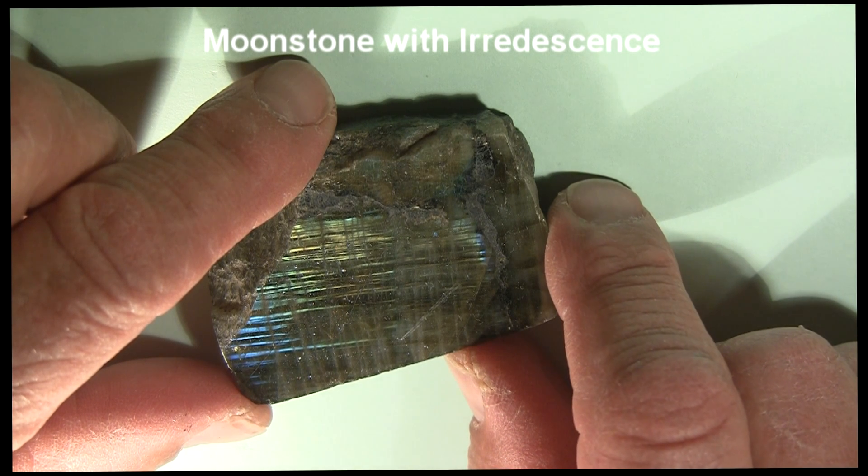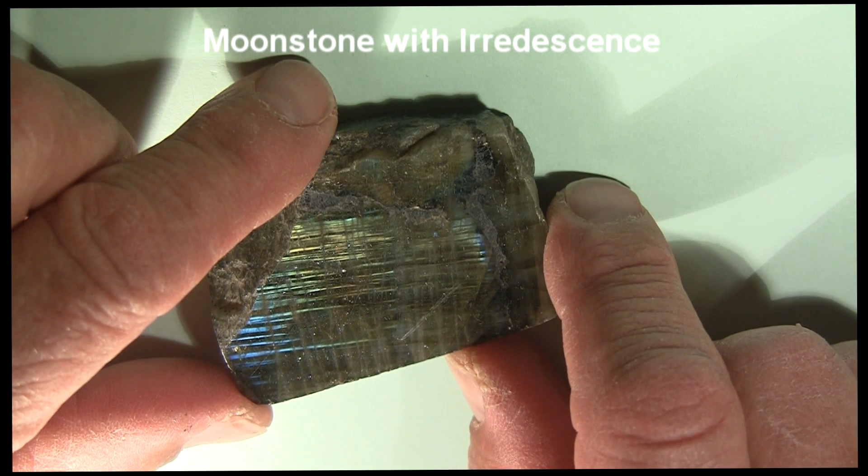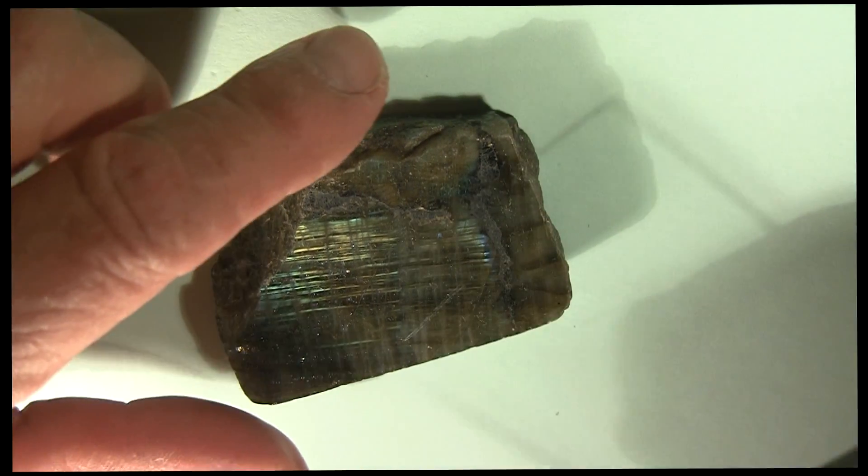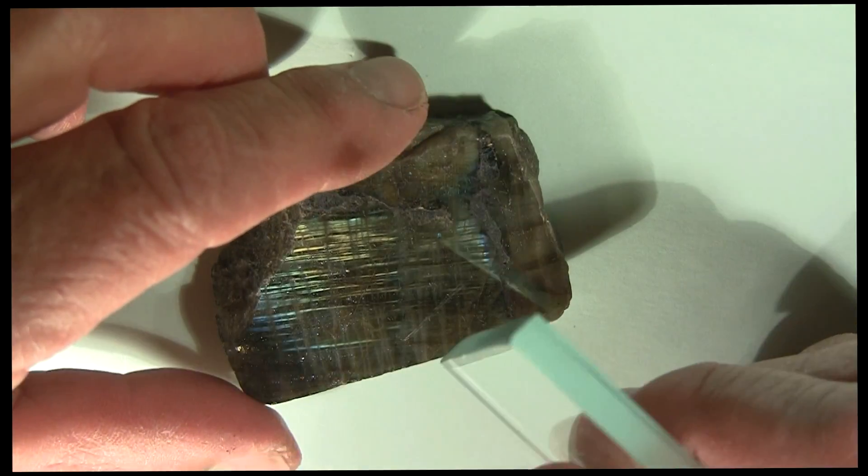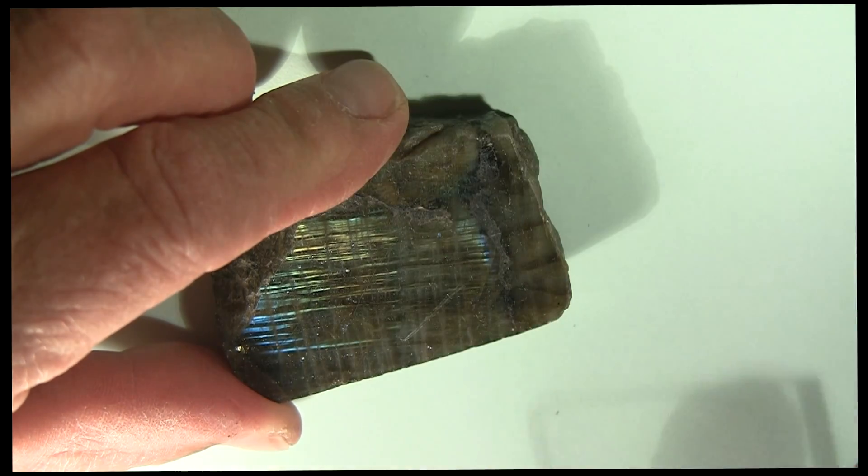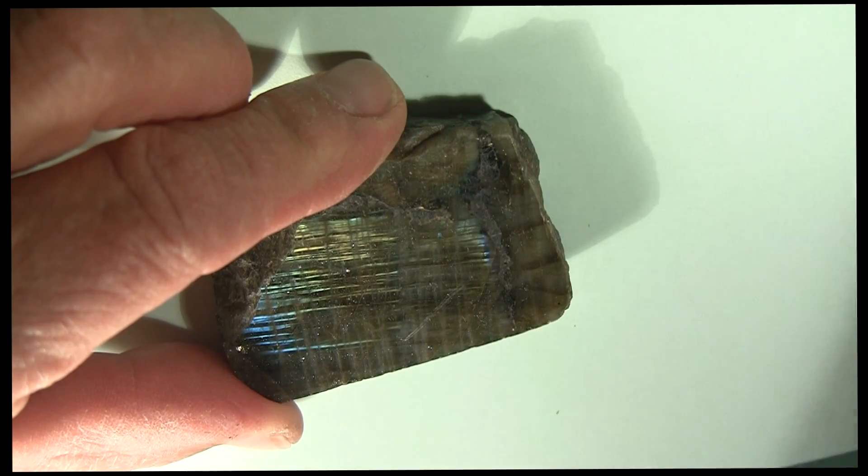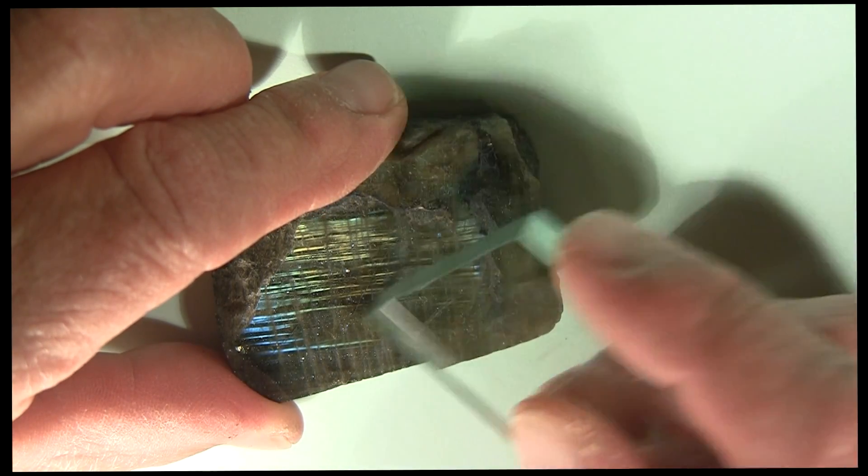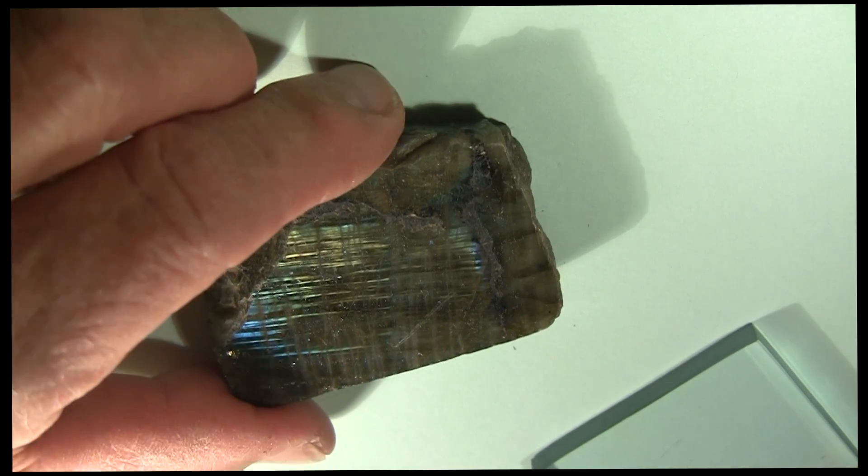Now the hardness of plagioclase feldspar is 6. That means it is harder than a piece of glass. So I'll rub this piece of glass across the surface here, of this polished surface. See if I can't scratch it. A little bit of the glass comes off, but it definitely did not scratch the plagioclase, the labradorite.